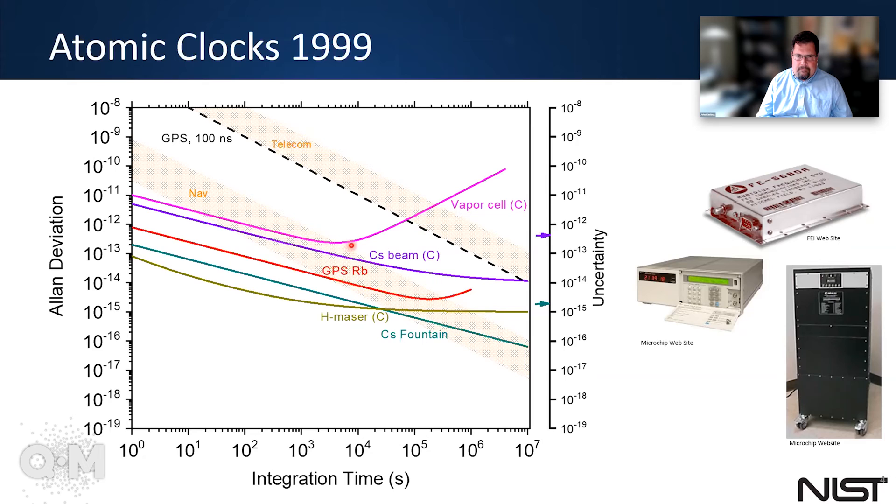low power, and low cost, but their Allen deviations are worse than other types of clocks, such as cesium beams and hydrogen masers.